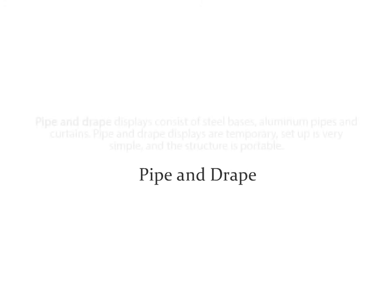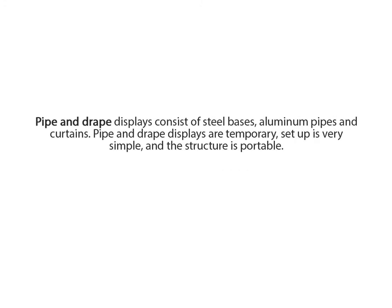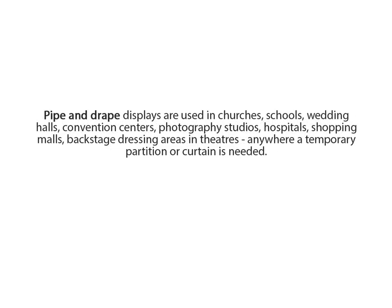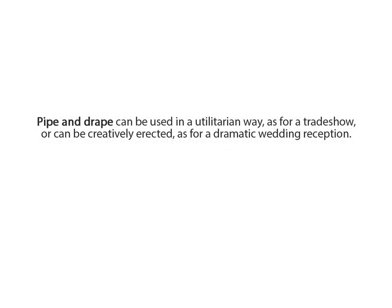Pipe and Drape. Pipe and Drape displays consist of steel bases, aluminum pipes, and curtains. Pipe and Drape displays are temporary — setup is very simple and the structure is portable. Pipe and Drape displays are used in churches, schools, wedding halls, convention centers, photography studios, hospitals, shopping malls, backstage dressing areas in theaters — anywhere a temporary partition or curtain is needed. Pipe and Drape can be used in a utilitarian way, as for a trade show, or can be creatively erected as for a dramatic wedding reception.